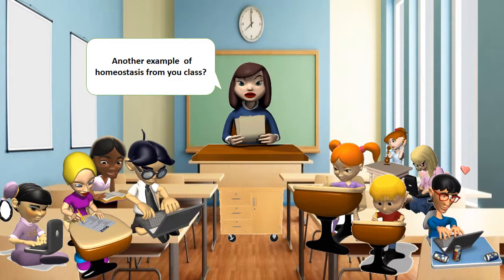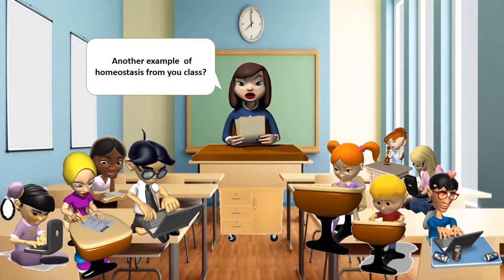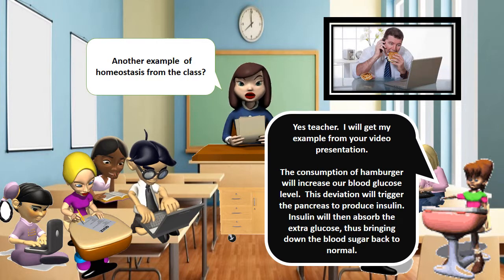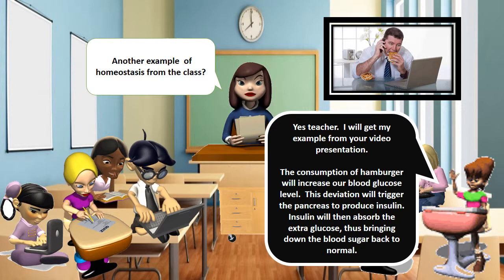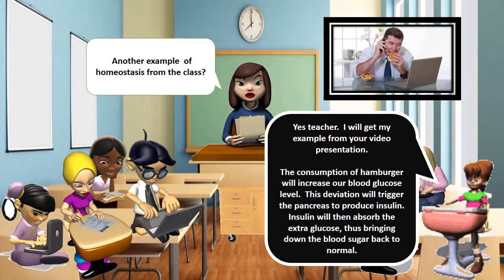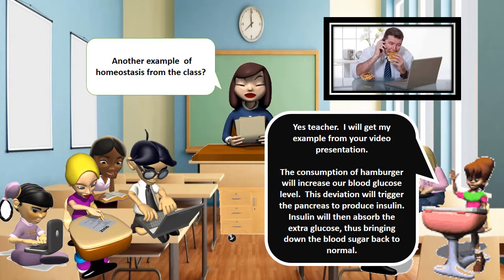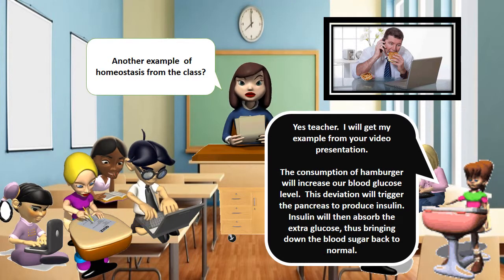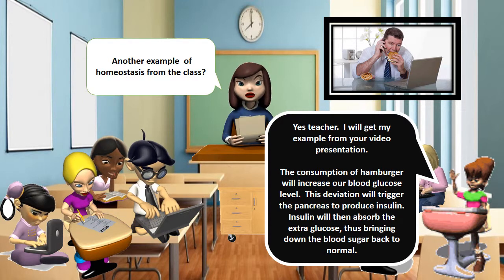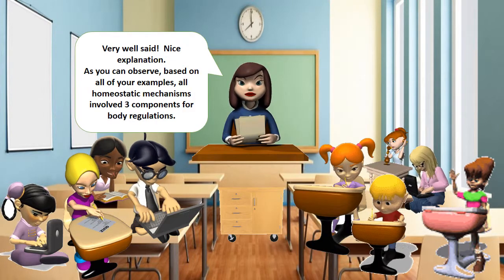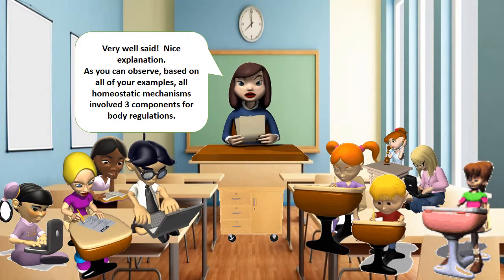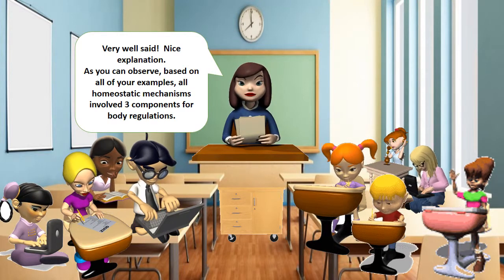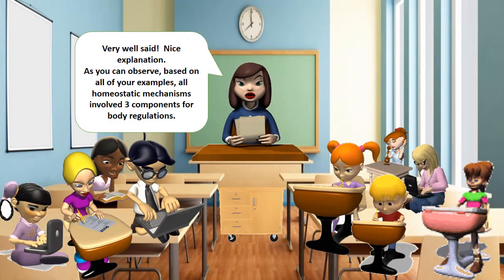Another example of homeostasis from your class? Yes, teacher. I will get my example from your video presentation. The consumption of a hamburger will increase our blood glucose level. This deviation will trigger the pancreas to produce insulin. Insulin will then absorb the extra glucose, thus bringing down the blood sugar back to normal. Very well said. As you can observe, based on all of your examples, all homeostatic mechanisms involve three components for body regulation.